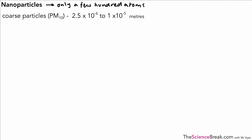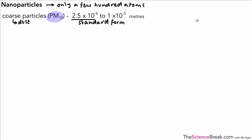Before we look at nanoparticles in detail, we can look at two other sizes of particles. The first is called coarse particles, often referred to as dust — things like dust or pollen grains. We refer to these as PM10, and here are their sizes as a range in standard form.